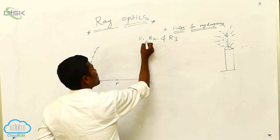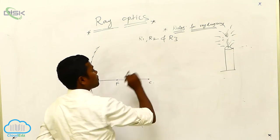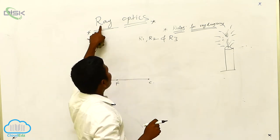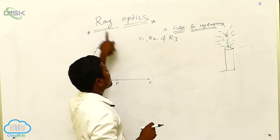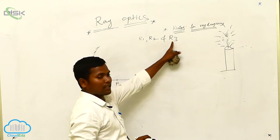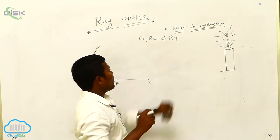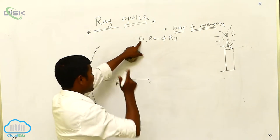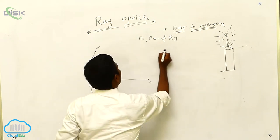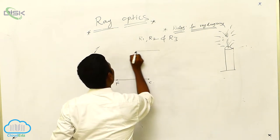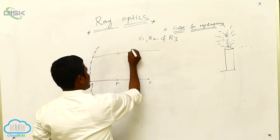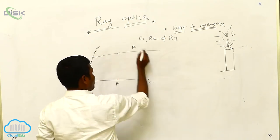Why have I taken R1, R2, and R3? Because in the word 'ray' itself there is an R — that's why: Ray 1, Ray 2, Ray 3. What is the characteristic of Ray 1? Ray 1 means you take a parallel ray — this is R1. There is a light source; from that you consider one ray that is coming in and striking on the mirror.